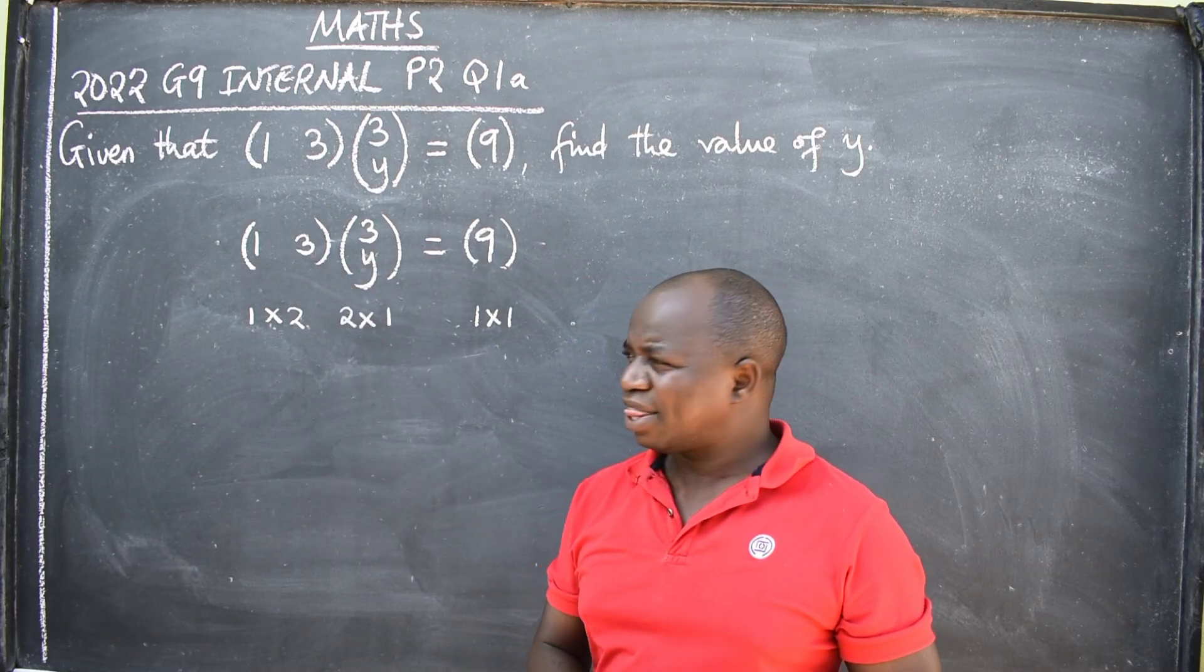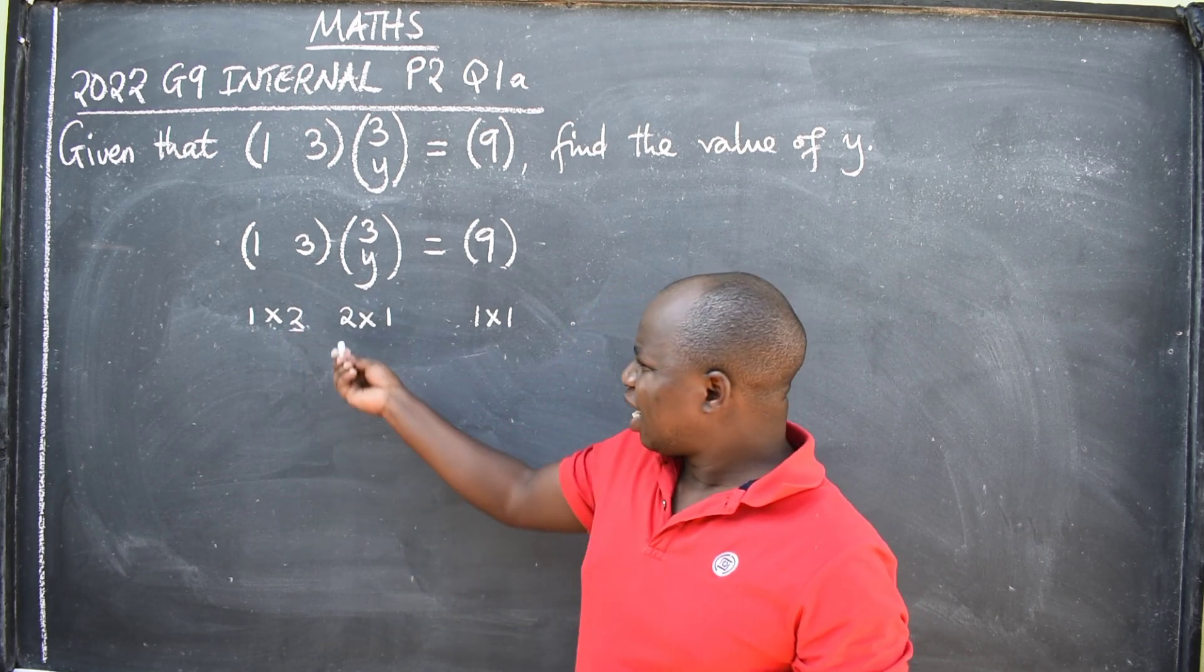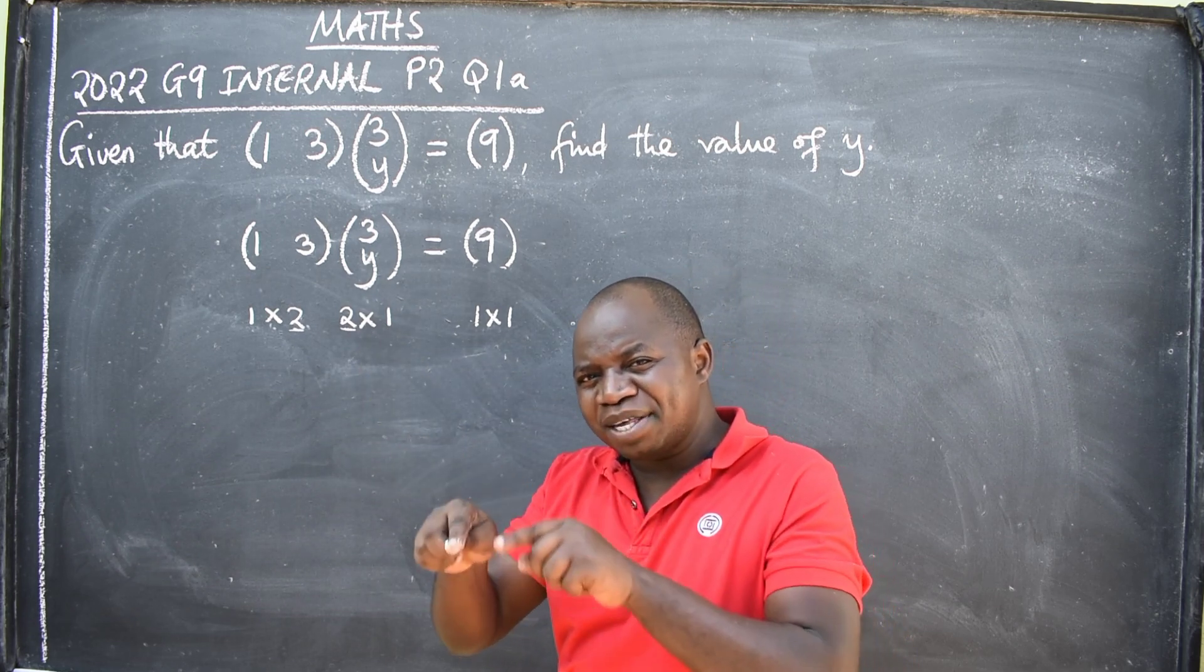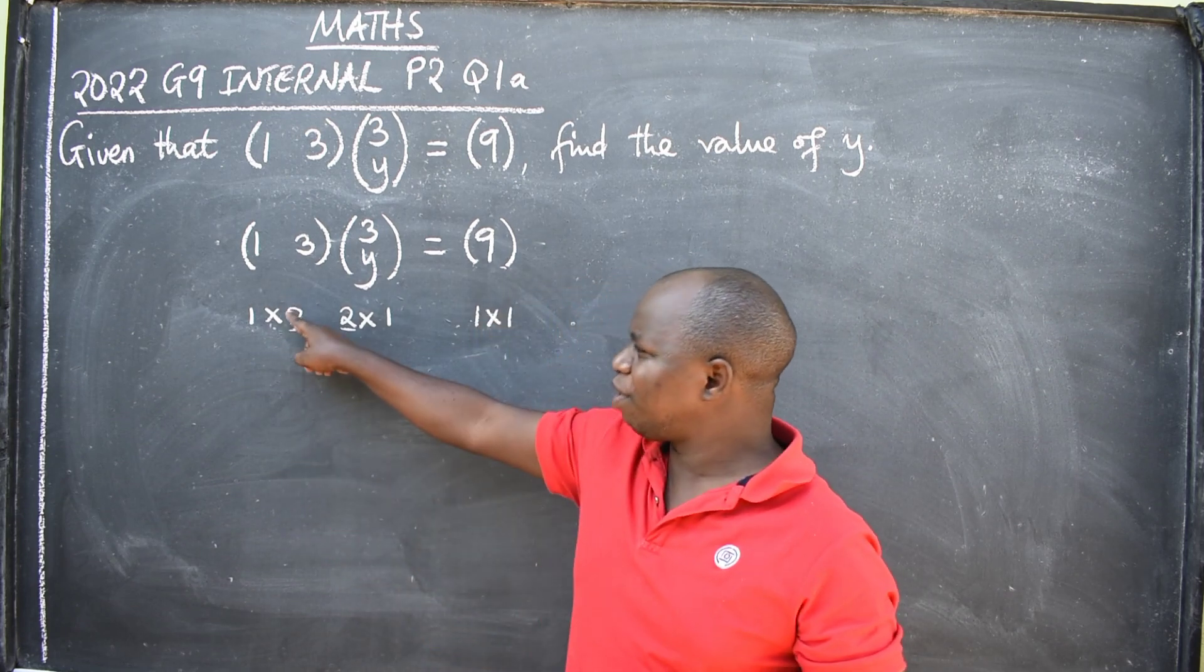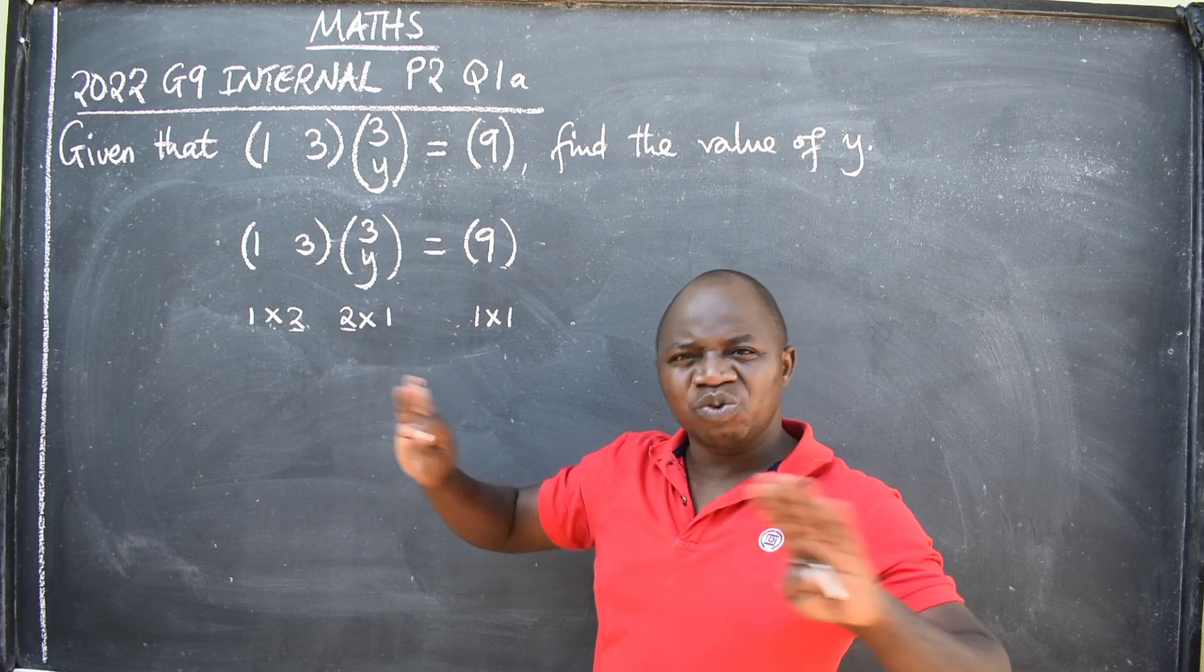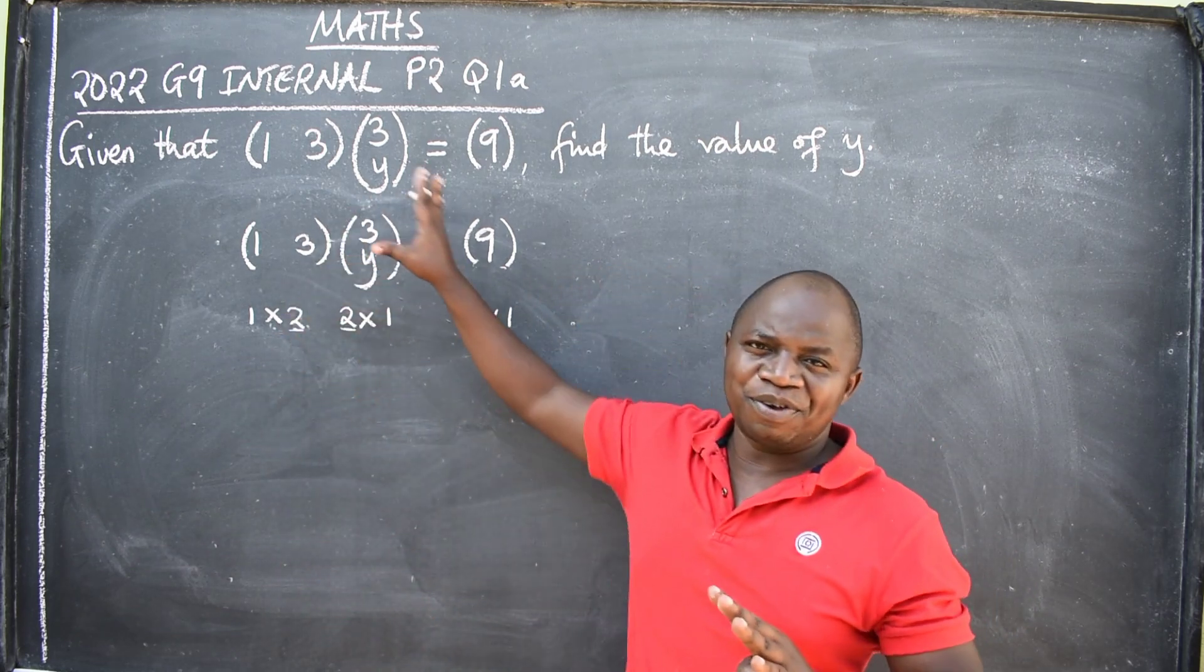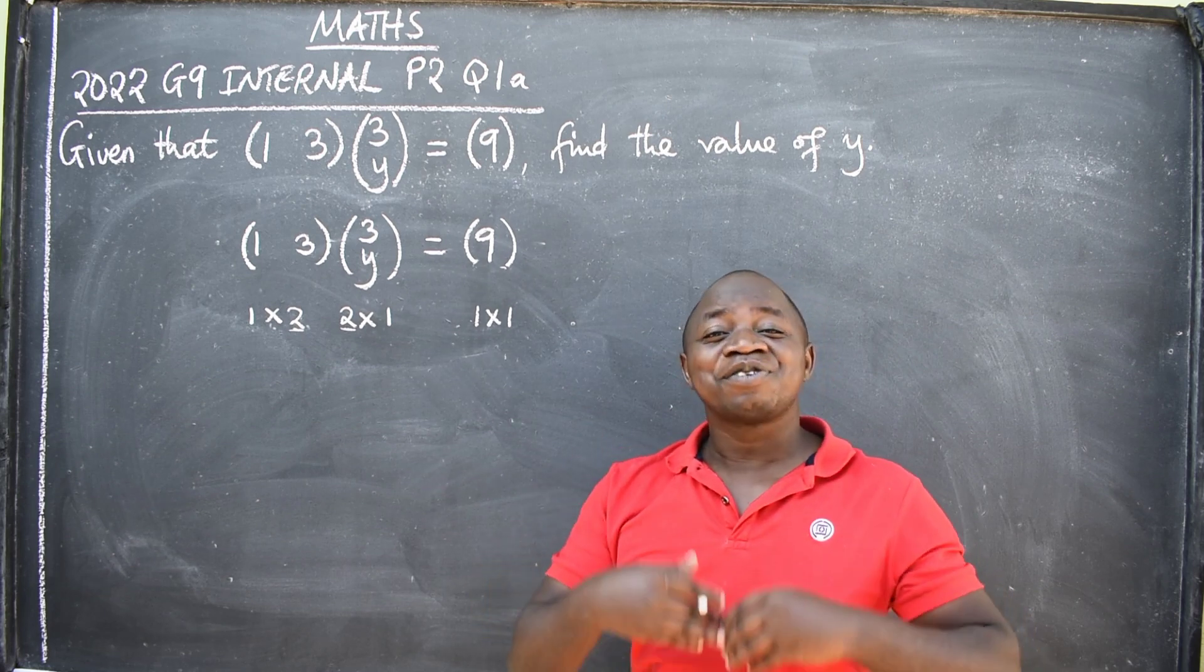I want you to know that this second number and this first number should always be the same. Always be the same. If they are different, for example, if you have a two here, then here you have a three, don't waste time. The two matrices cannot be multiplied. It means there is a problem with the question. And it will be given as a free mark.